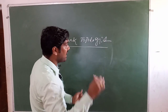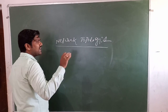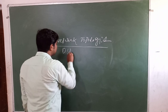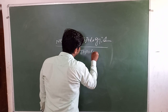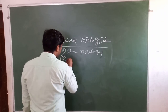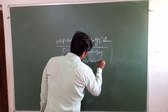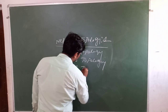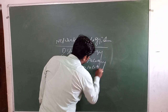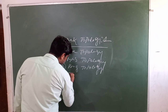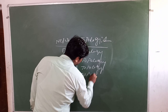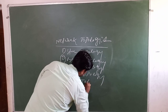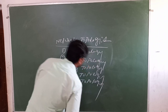Topology is classified into different types. Number 1 is star topology, number 2 is bus topology, number 3 is ring topology, number 4 is tree topology, and number 5 is mesh topology.